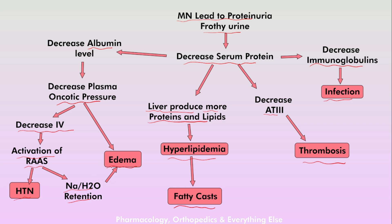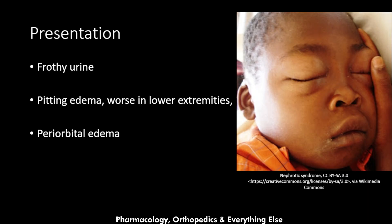During a relapse of membranous nephropathy, the patient presents with hypertension, edema, hyperlipidemia, fatty casts, thrombosis, and possibly infection. Regarding clinical presentation, it presents with nephrotic syndrome symptoms: frothy urine and pitting edema, which is worse in the lower extremities.